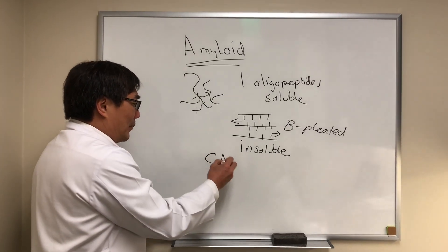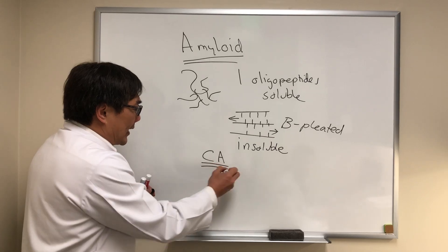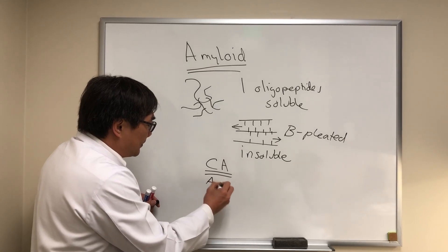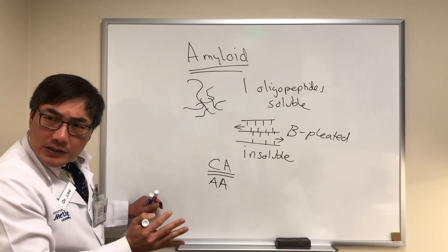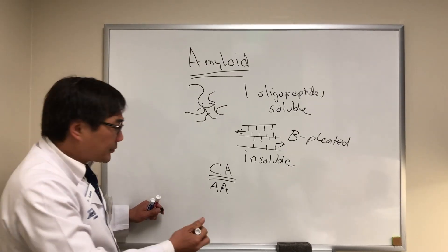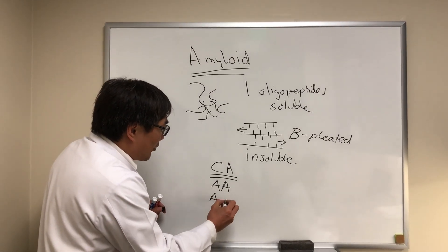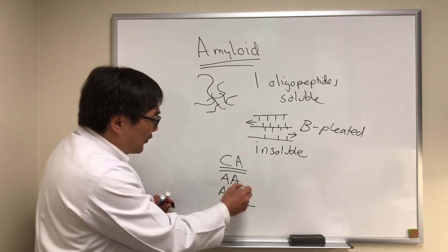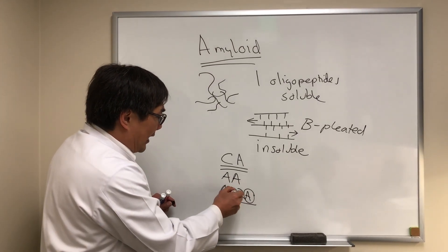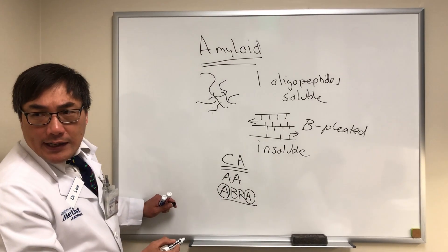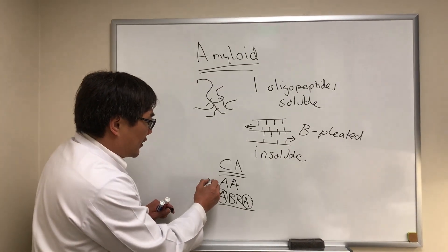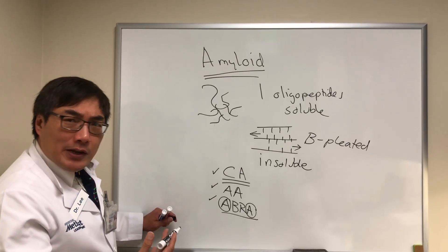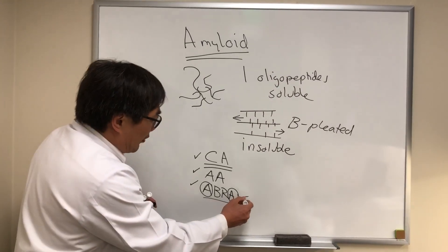We have cerebral amyloid, which can deposit in your brain and cause neurodegenerative disease. We've got amyloid angiopathy, which causes the blood vessel to be friable and causes intracranial hemorrhages. And then we've got amyloid beta-related angiitis — an inflammation, an autoimmune attack on the amyloid itself. So the amyloid itself is causing the CNS angiitis, and these are the ways it comes to us as primary CNS angiitis related to amyloid.